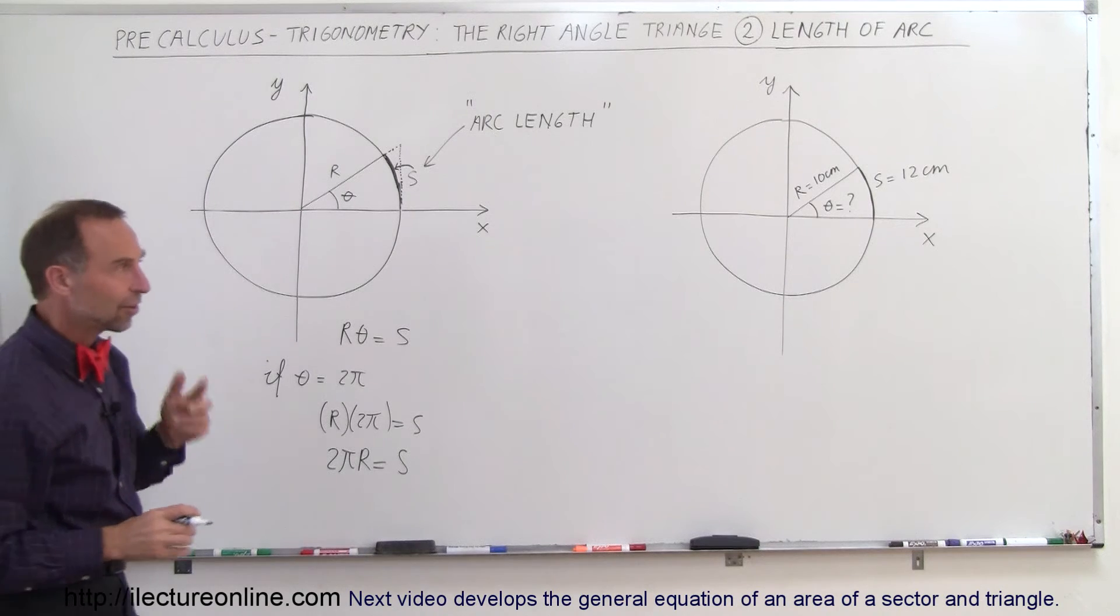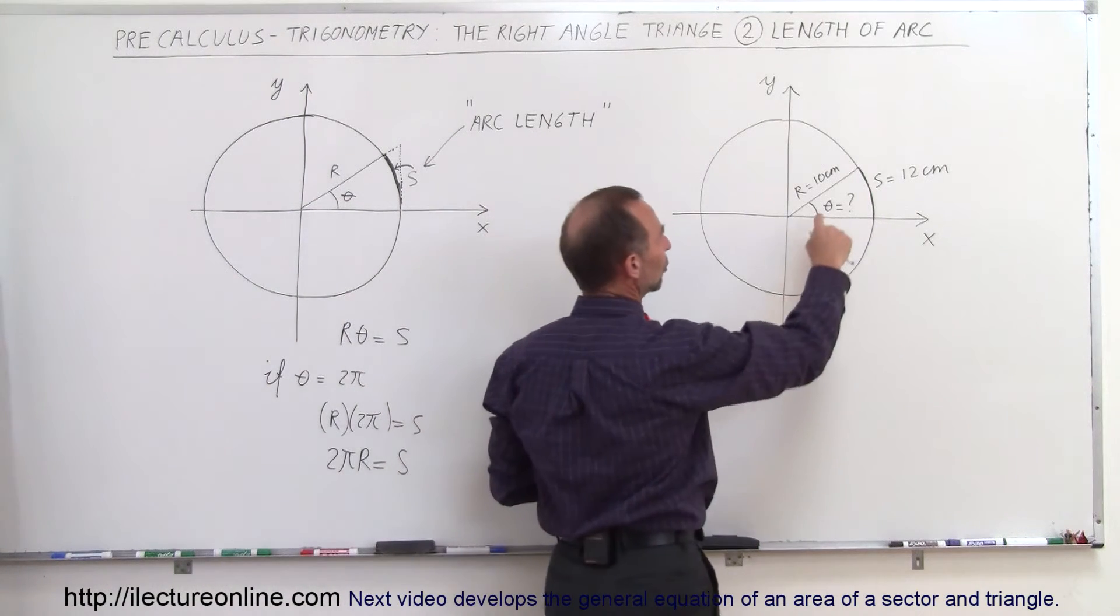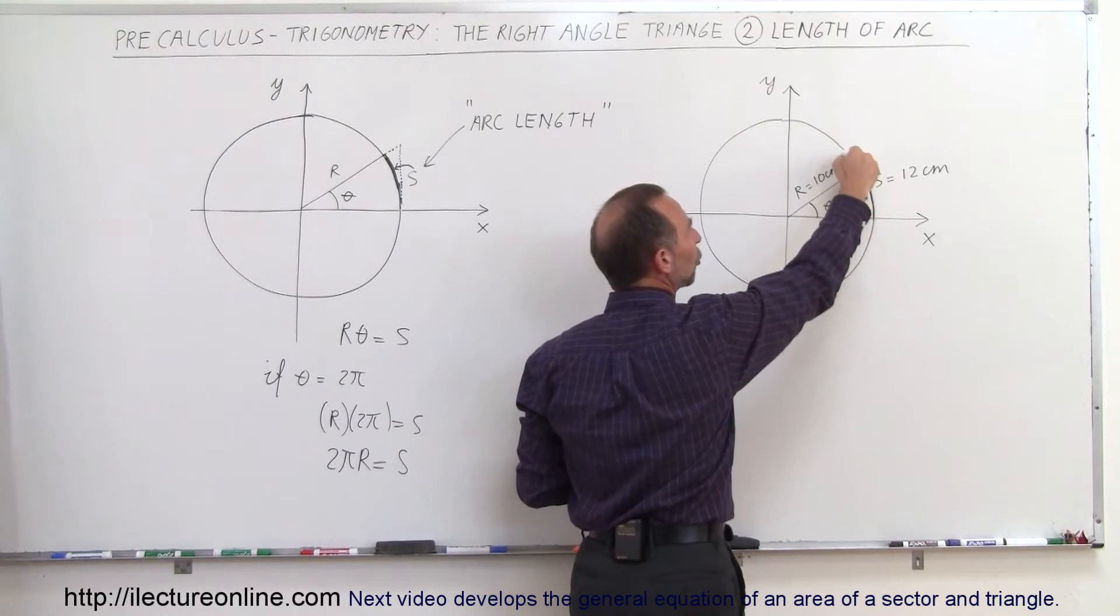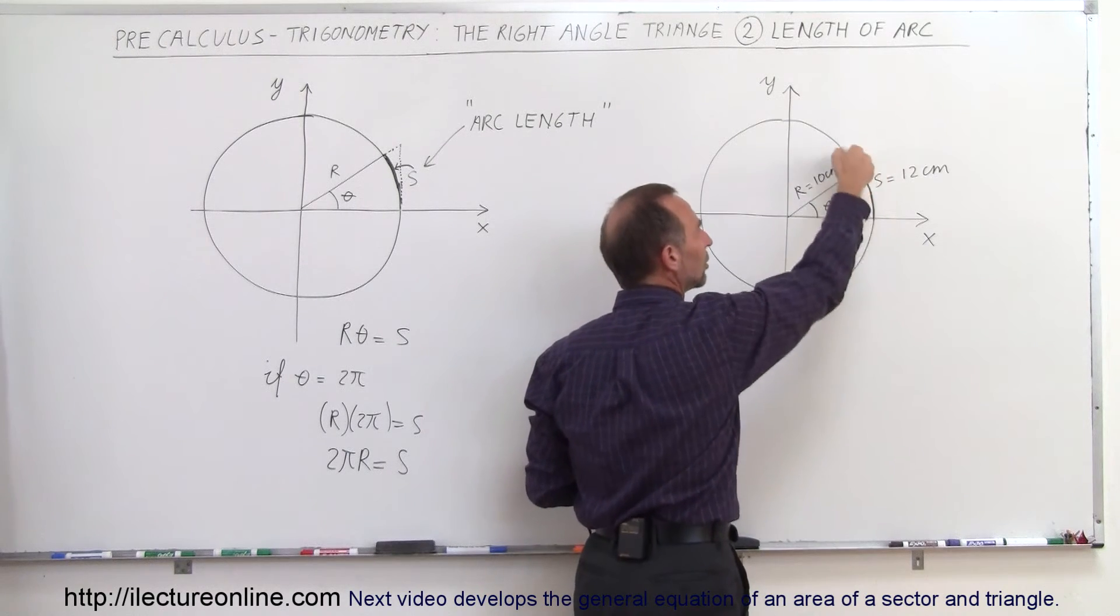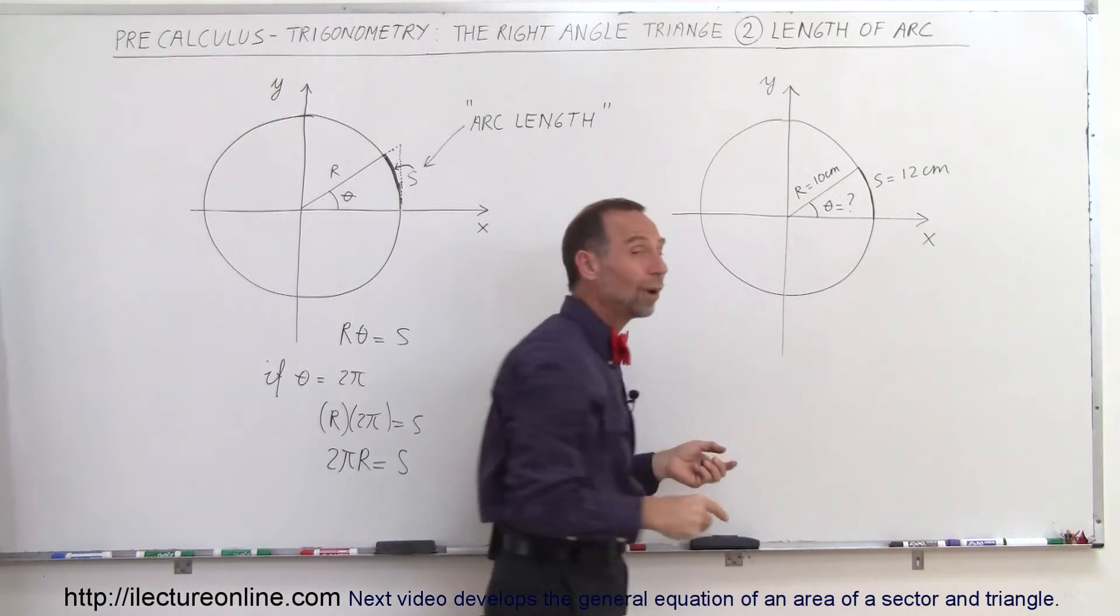So let's do a little exercise here to make sure we understand this. Here we have a circle with radius 10 centimeters. We're told that the arc length, the section along the arc here, is 12 centimeters. What is the angle?